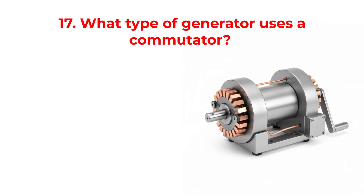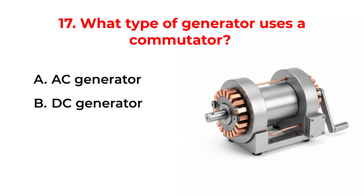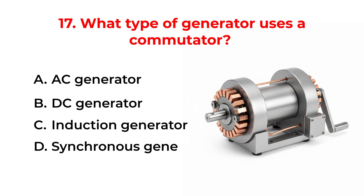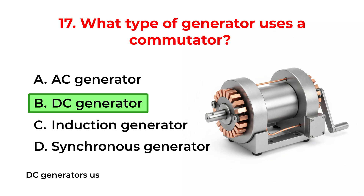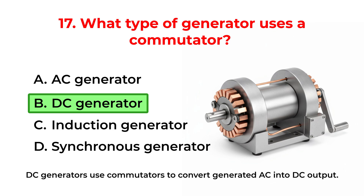What type of generator uses a commutator? A. AC generator. B. DC generator. C. Induction generator. D. Synchronous generator. The correct answer is Option B: DC generator. DC generators use commutators to convert generated AC into DC output.